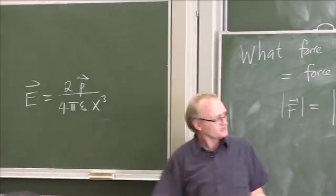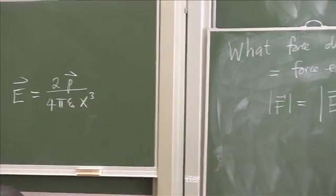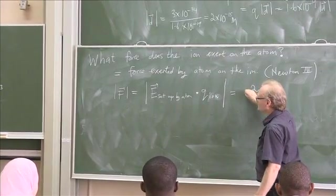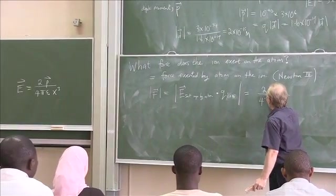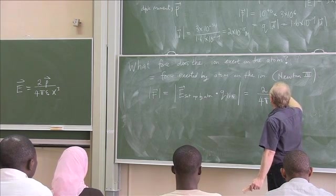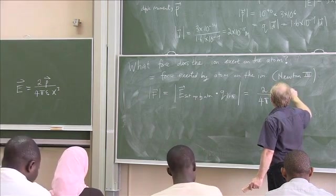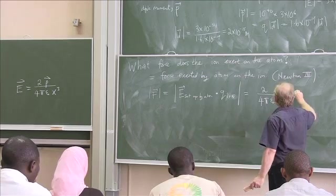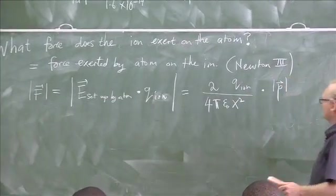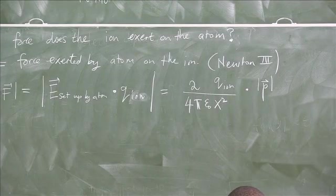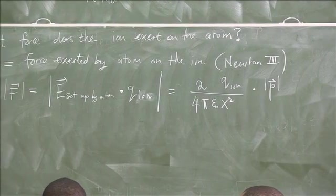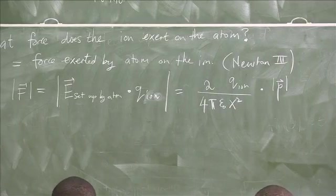So I'm going to use this now. This will be equal to 2 over 4π ε₀ x squared. I will have the charge of the ion, and I will multiply by the magnitude of p times 1 over x cubed.